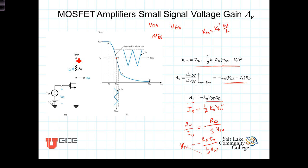But we can get an upper limit on A_v, saying that A_v max is equal to V_DD divided by one-half V_OV, with a minus sign out in front.